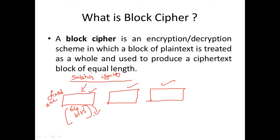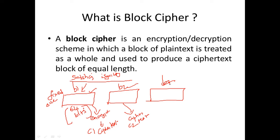In block cipher, we encrypt each block to get the ciphertext. So for each block there will be a corresponding ciphertext: block B1 gives ciphertext C1, block B2 gives ciphertext C2, block B3 gives ciphertext C3. We employ an encryption algorithm to get the ciphertext.